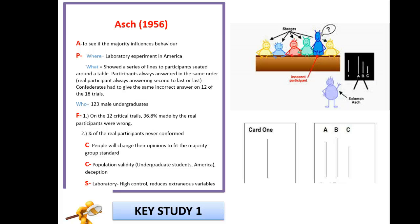Our key study here by Asch — I've summarised it as much as possible in terms of the APFCC. The last two, criticisms and strengths, I've focused on population validity and the strengths in terms of being a laboratory study, having high control and reducing extraneous variables. If you've listened to my other lectures, you'll notice that I filter down as much as possible in terms of remembering research. Asch is the only one I'm going to use for conformity, and I'm going to use him time and time again, including his variations later on down the line.